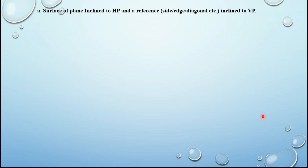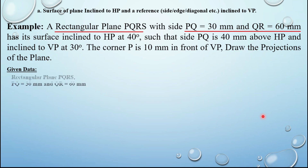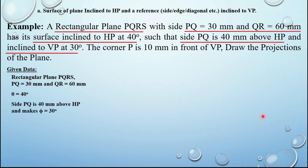For better understanding, let us take an example — case three, sub-case A. A rectangular plane PQRS with side PQ = 30 mm and QR = 60 mm has its surface inclined to HP at 40 degrees, such that side PQ is 40 mm above HP and inclined to VP at 30 degrees. The corner P is 10 mm in front of VP. Given data: theta = 40°, side PQ is 40 mm above HP, phi = 30°, and corner P is 10 mm in front of VP.